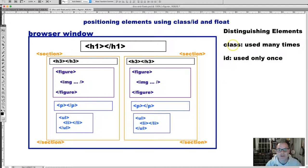And we do this using our class and ID attributes. Class and ID attributes. These are used to distinguish elements in our code from each other. So how distinguishing one section from another section. One figure from another figure. One paragraph from another paragraph. One list from another list.